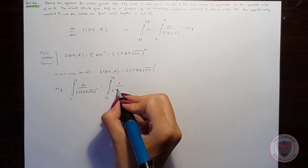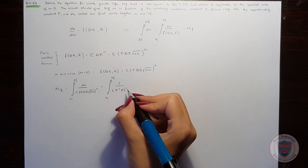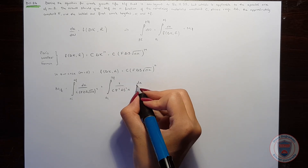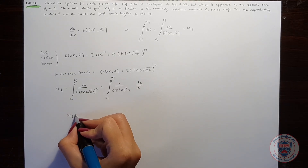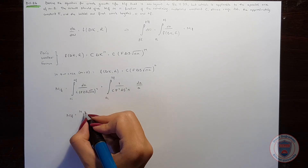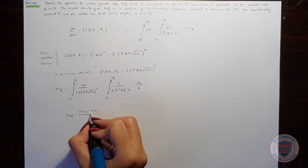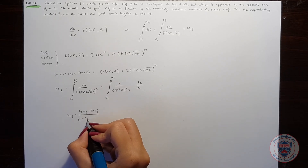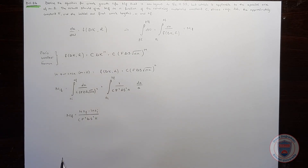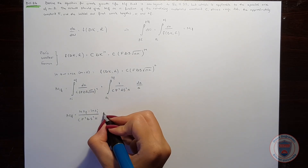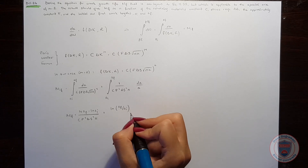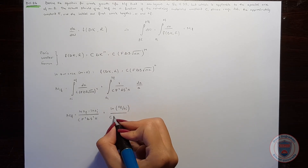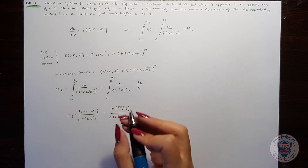This simplifies to 1 over C times F squared times delta S squared times pi, multiplied by the integral of dA over A. Evaluating this integral, N_f will be equal to ln(A_f) minus ln(A_i), all over C times F squared times delta S squared times pi. Assuming all other terms are constants, the final result is: N_f equals ln(A_f / A_i) divided by C times F squared times delta S squared times pi.